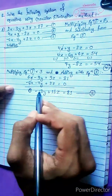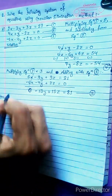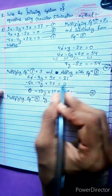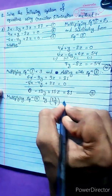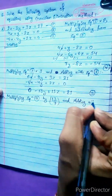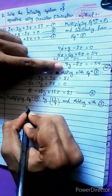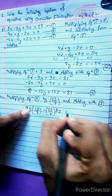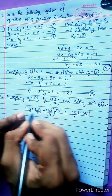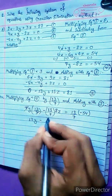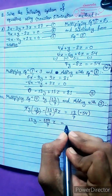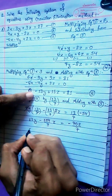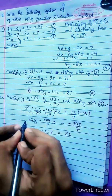Now solving equations 4 and 5. Multiplying equation 4 by 13/7 and adding with equation 5. We get 13y minus 104/7 · z equals minus 702/7. Adding equation 5: negative 13y plus 11z equals 81.